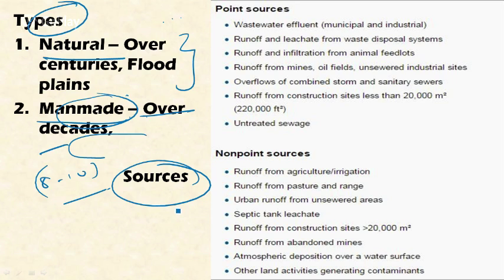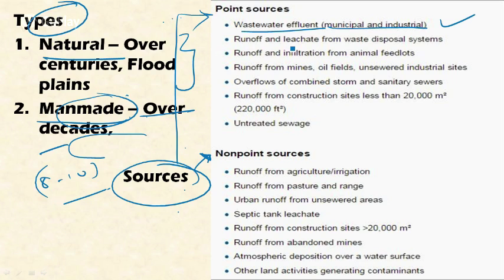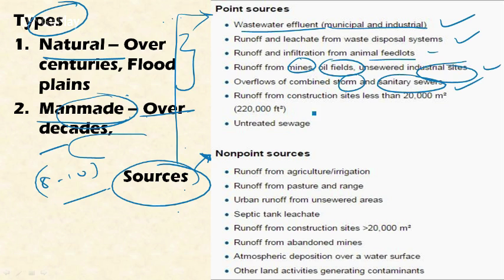The sources of nutrients that trigger eutrophication include point sources and non-point sources. Point sources directly contribute nutrients to the water body and include wastewater effluents from municipal and industrial bodies, runoff and leaching from waste disposal systems, runoff and infiltration from animal feedlots, runoff from mines, oil fields, and unsewered industrial sites, and overflow of combined stormwater and sanitary sewage.